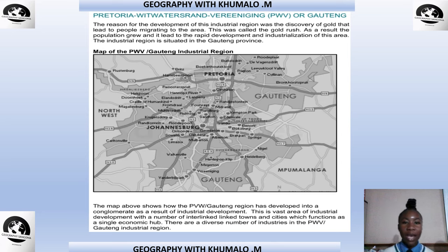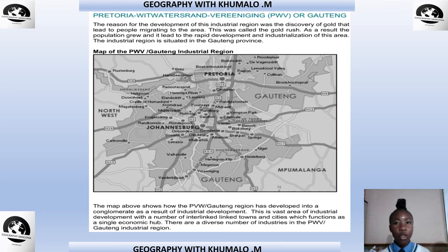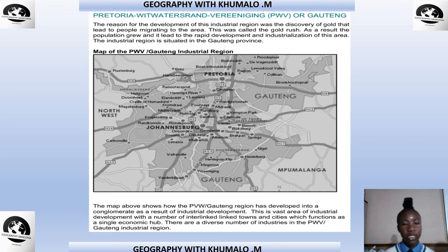The map shows the location of the four industrial regions. The reason for the development of the PWV industrial region was the discovery of gold, which led to people migrating to the area — this was called the gold rush. As a result, the population grew, leading to the rapid development and industrialization of this area.